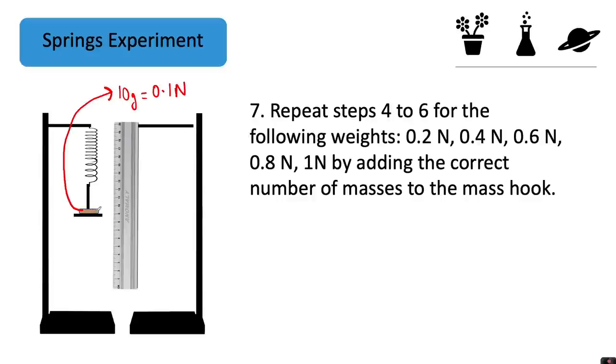So here all together we have one mass attached to the mass hook, so the mass hook itself was 0.1 Newtons and the mass on top is 0.1 Newtons, so all together this is how we'd get our pull force of 0.2 Newtons.